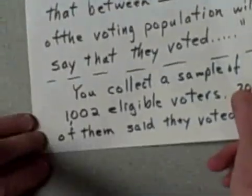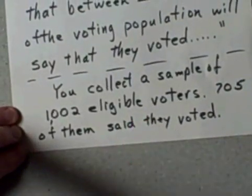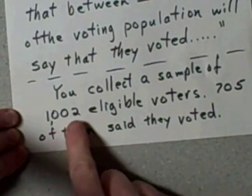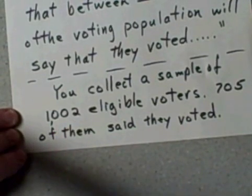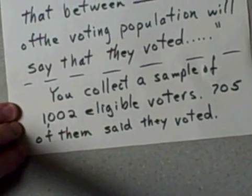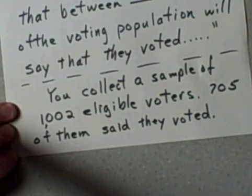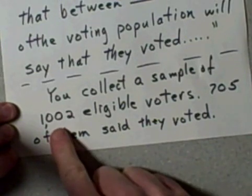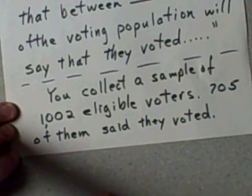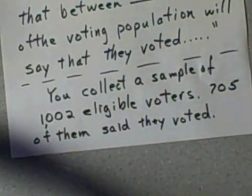Let's say you collected a sample and you questioned 1002 eligible voters. Of those 1002 eligible voters, it turns out that 705 of them said that they did vote in the last election. So we'll keep referring to 1002 as the size of our sample and 705 of those said they did vote.